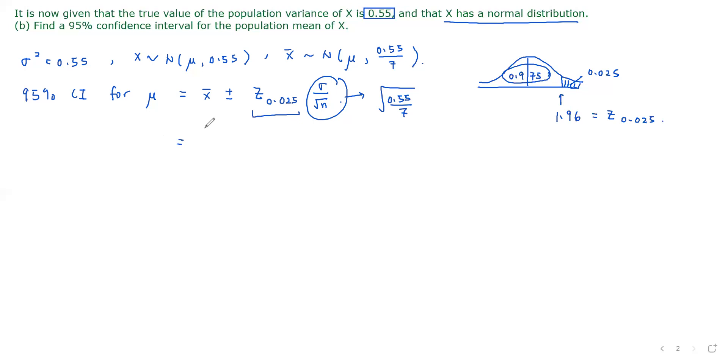We do not know the mean. We use the mean we found in part A, which is 4.96. Then we have plus minus 1.96 times the square root of 0.55 over 7. And we get an interval from 4.41 to 5.51.